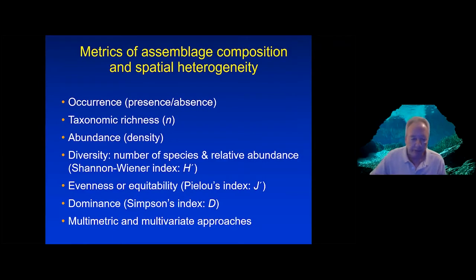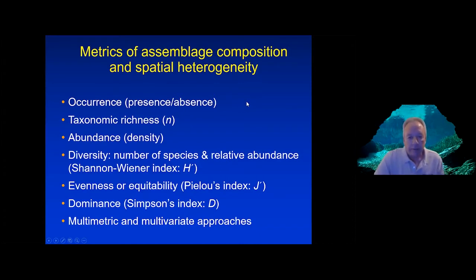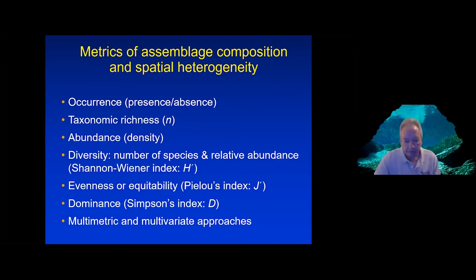Ecologists use a number of different statistical methods for evaluating aquatic communities. These are some of the types of statistical metrics used: presence or absence, taxonomic richness, abundance of particular species, relative abundance of combinations of species, and more sophisticated indices that combine taxonomic richness and abundance.